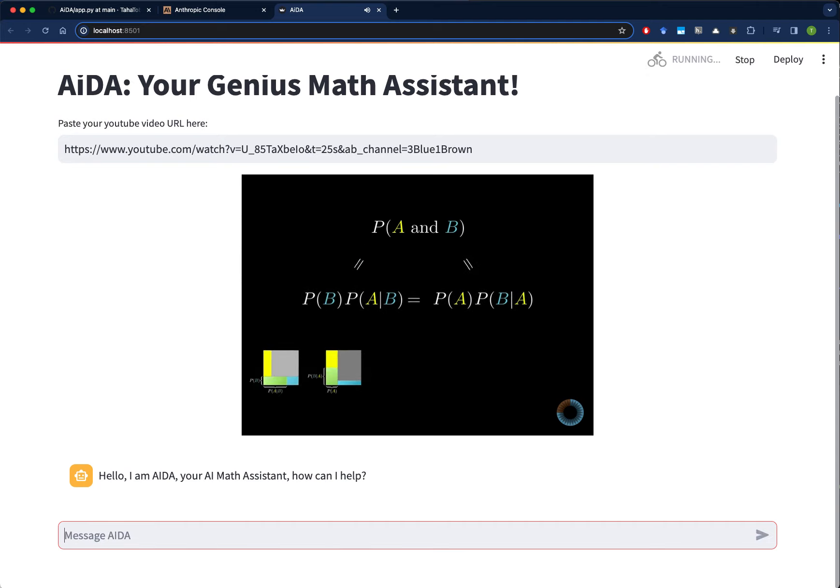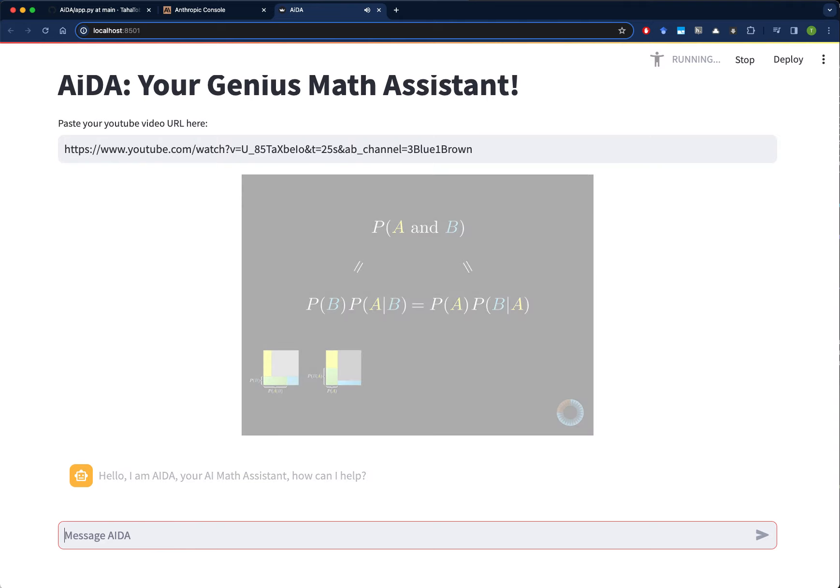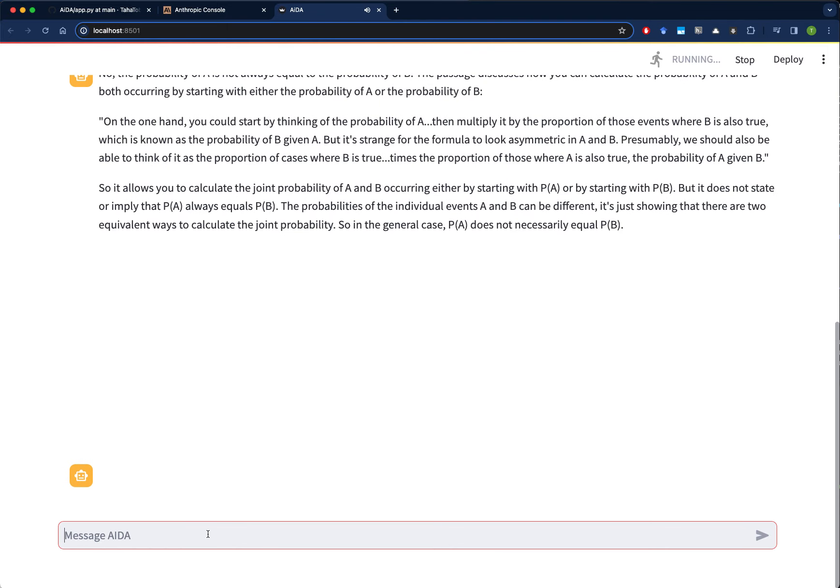And the fact that they're both the same gives us a way to express P of A given B in terms of P of B given A, or the other way around. So when one of these conditions is easier to put numbers to than the other—say when it's easier to think about the probability of seeing some evidence given a hypothesis rather than the other way around—this simple identity becomes a useful tool.